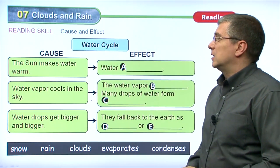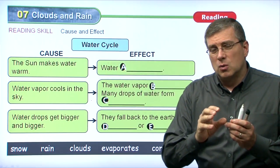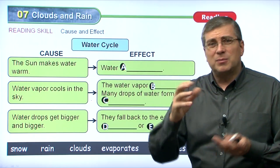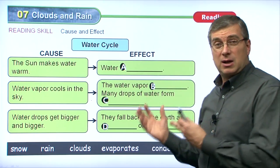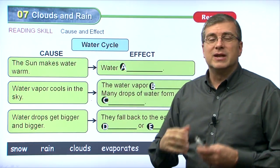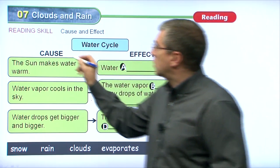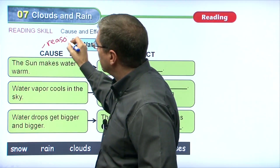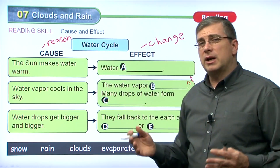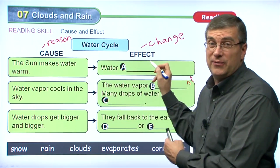Let's take a look at our reading skill chart: cause and effect. Each stage of the water cycle has a cause — the thing that creates a change — and an effect, which is the change itself. Cause is the reason; effect is the change. When we talk about cause and effect, we're talking about the reason for change. Why does something change? What is the cause? What is the effect?